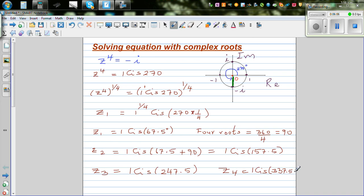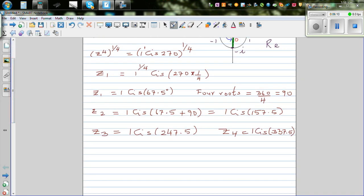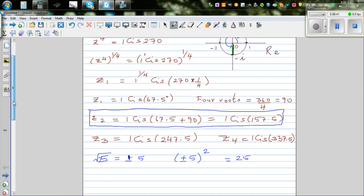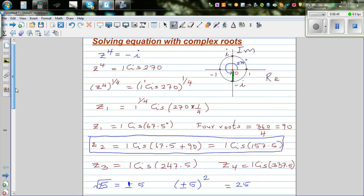Now to confirm your answer, let me confirm one answer. Suppose z2—let me explain before that. If you know that square root of 25 is plus or minus 5, because if you square plus or minus 5 you get 25. So basically what have we done? We have found the fourth root of negative i. The fourth root of negative i are these values. That is 1 cis 157.5. That means if you raise this by 4, you should get minus i. So let's check that.